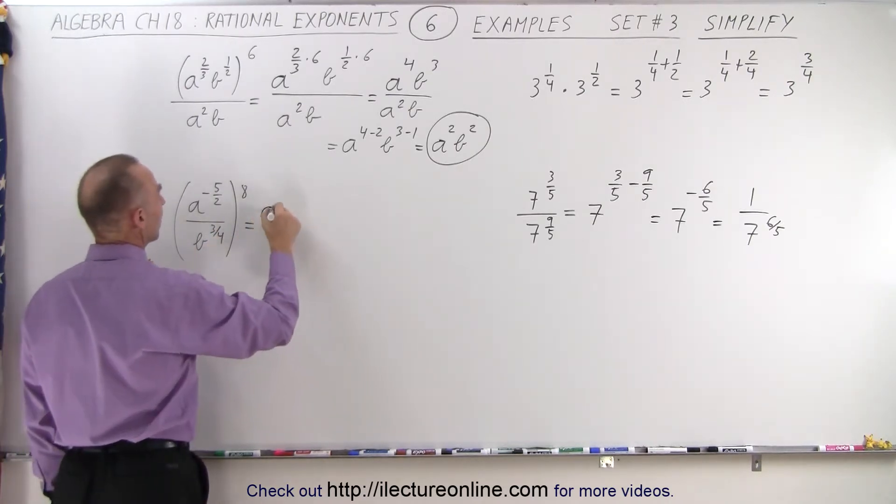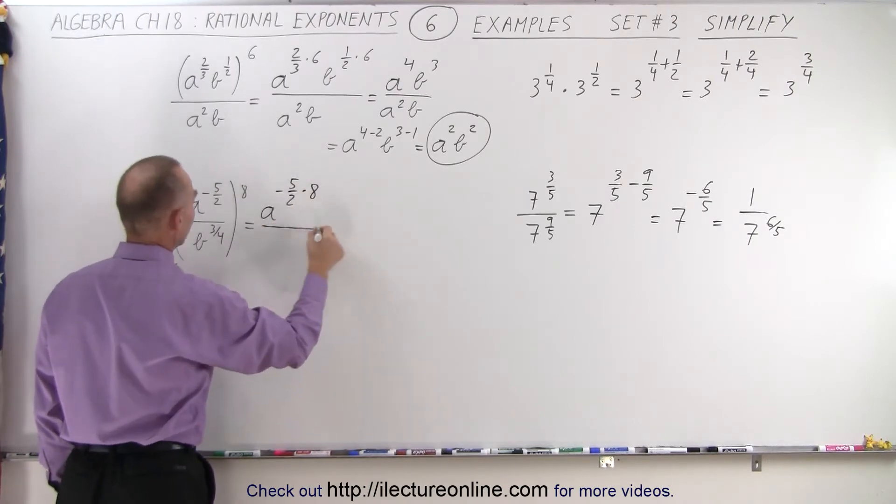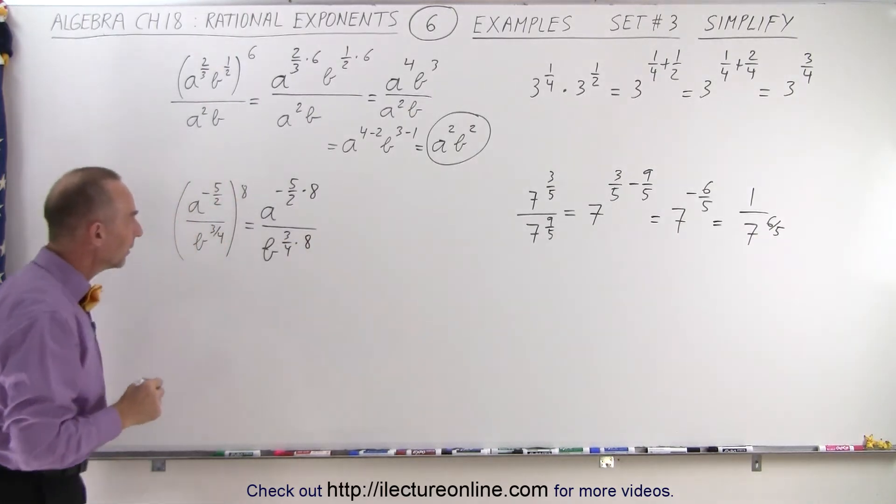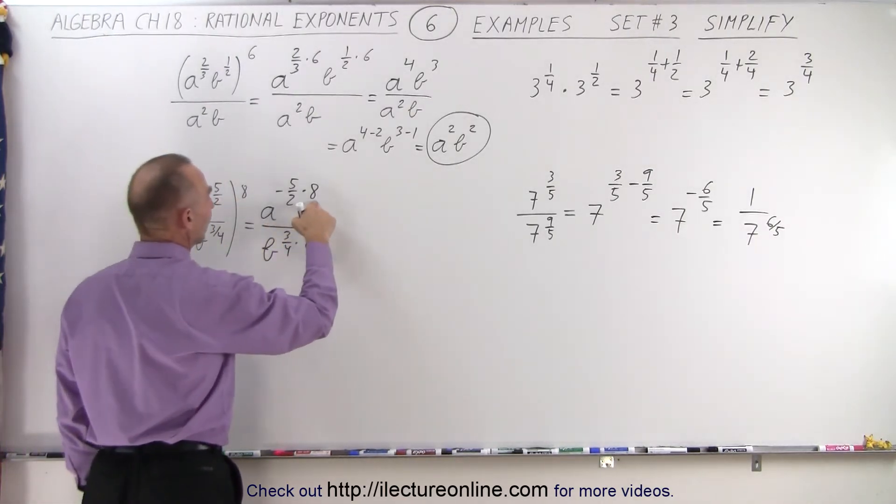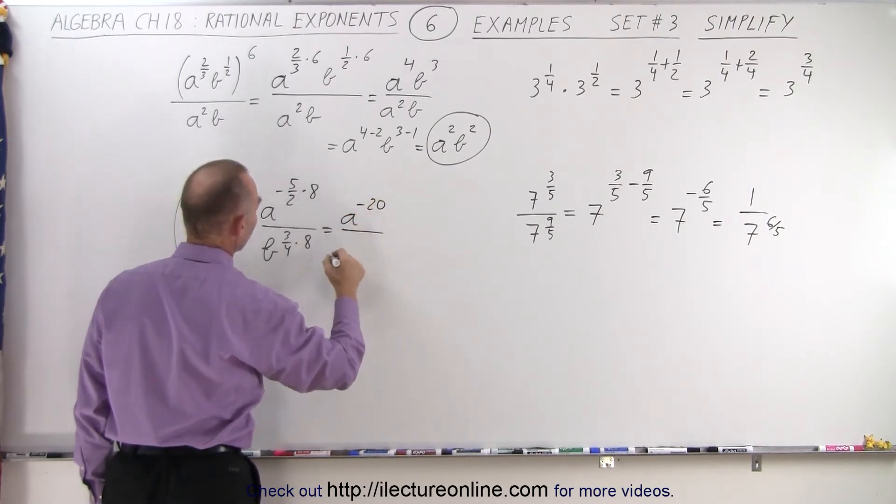So this can be written as a to the minus 5/2 times 8 power divided by b to the 3/4 times 8 power. And here, 2 goes into 8 four times, so this becomes a to the minus 20 divided by b to the 3/4 times 8 power.